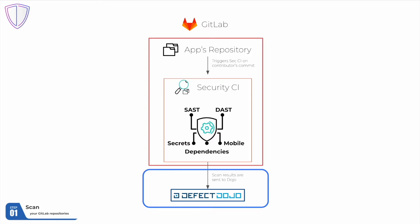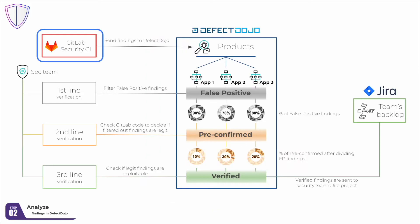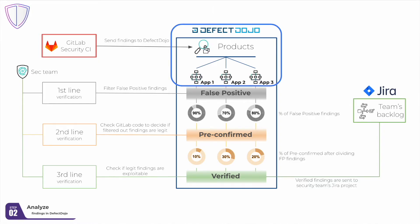Once the scanning is completed, all scanner findings are sent to your vulnerability management system. After all findings have been uploaded from the security CI to Defect Dojo, the vulnerability analysis process begins. This process consists of three lines of verification, so-called triage lines.